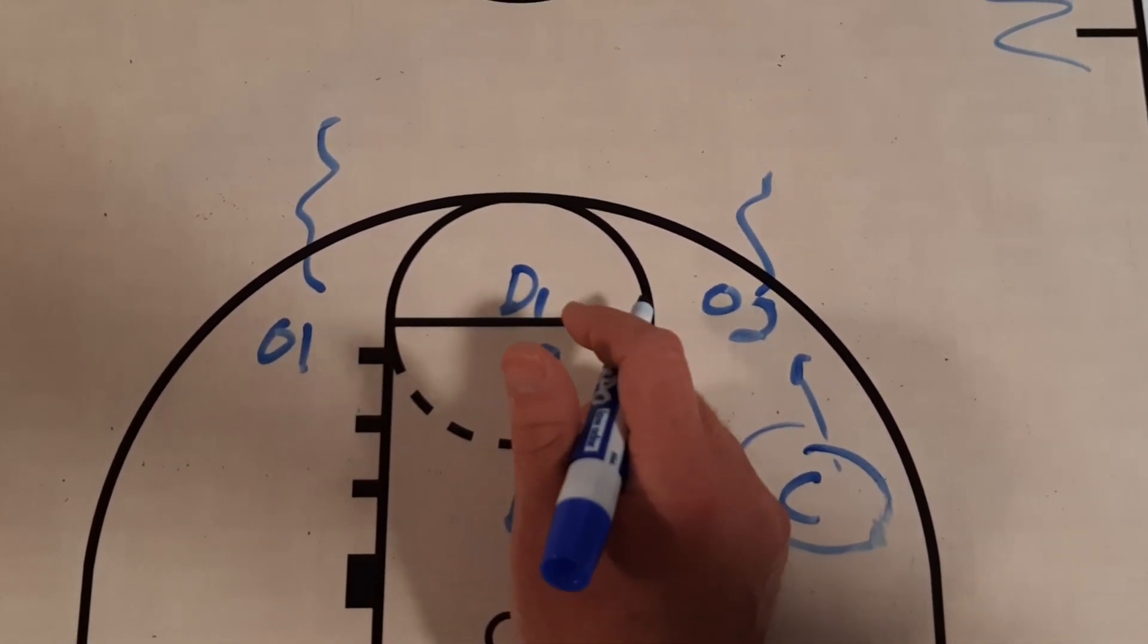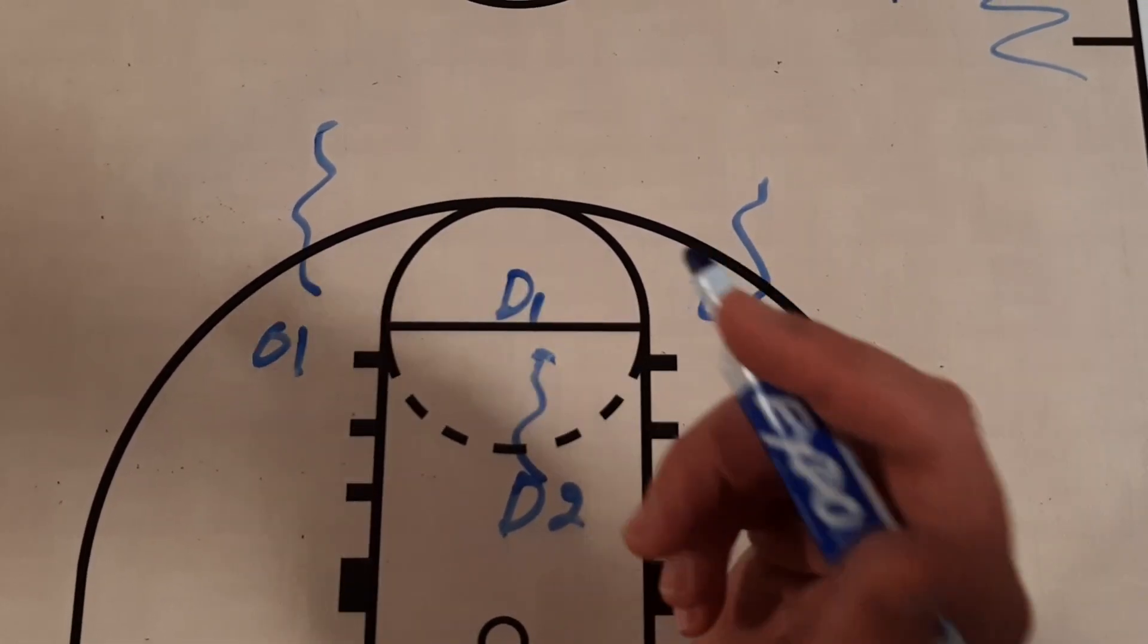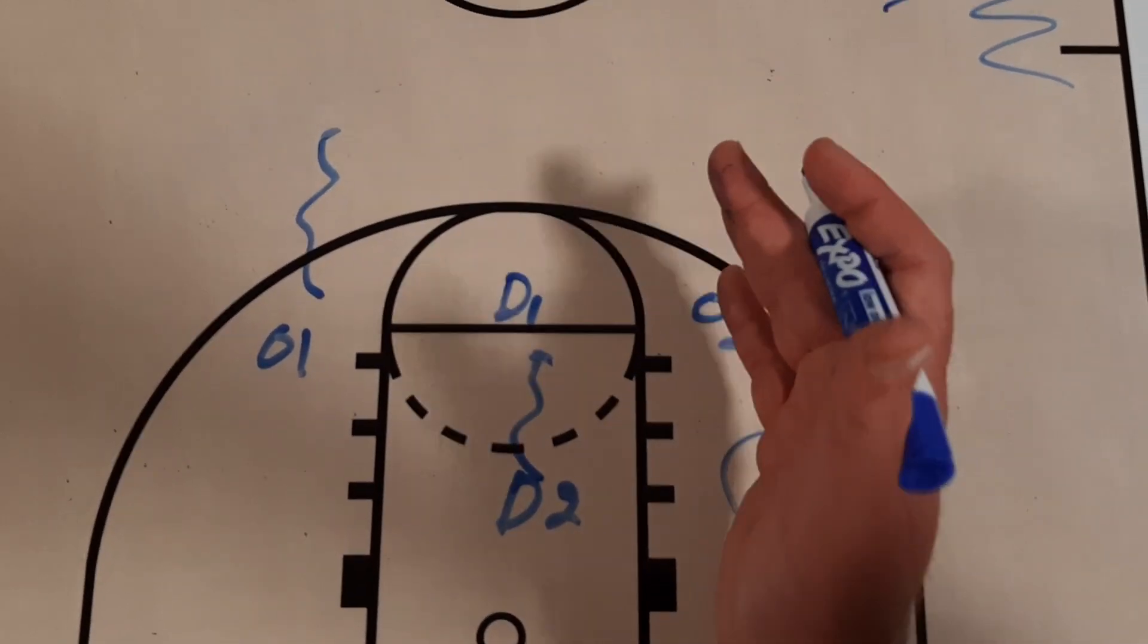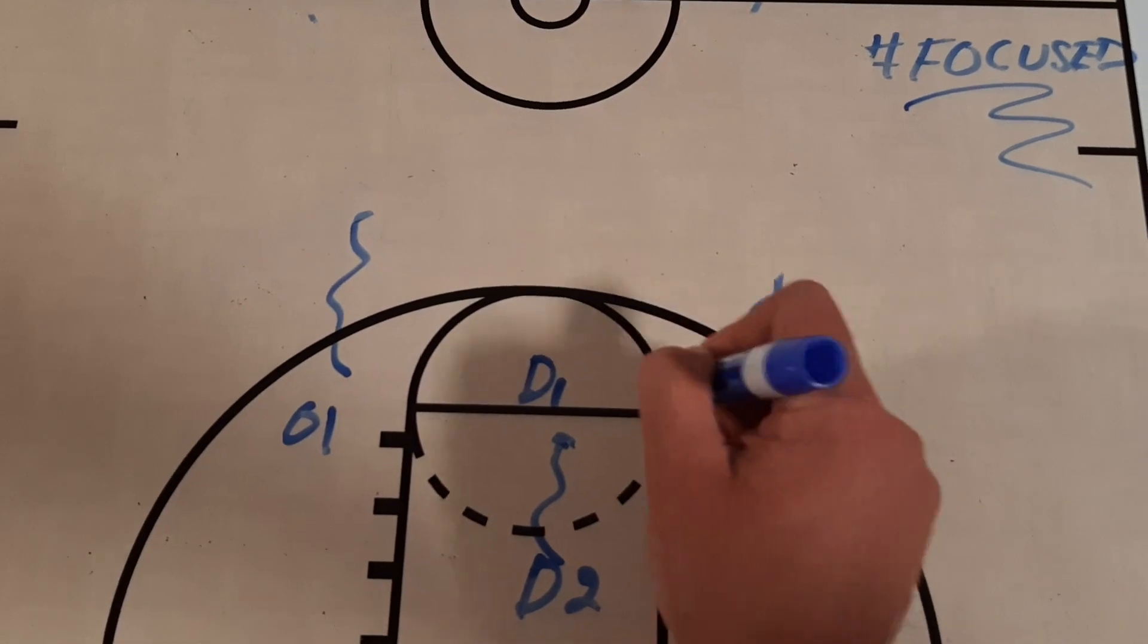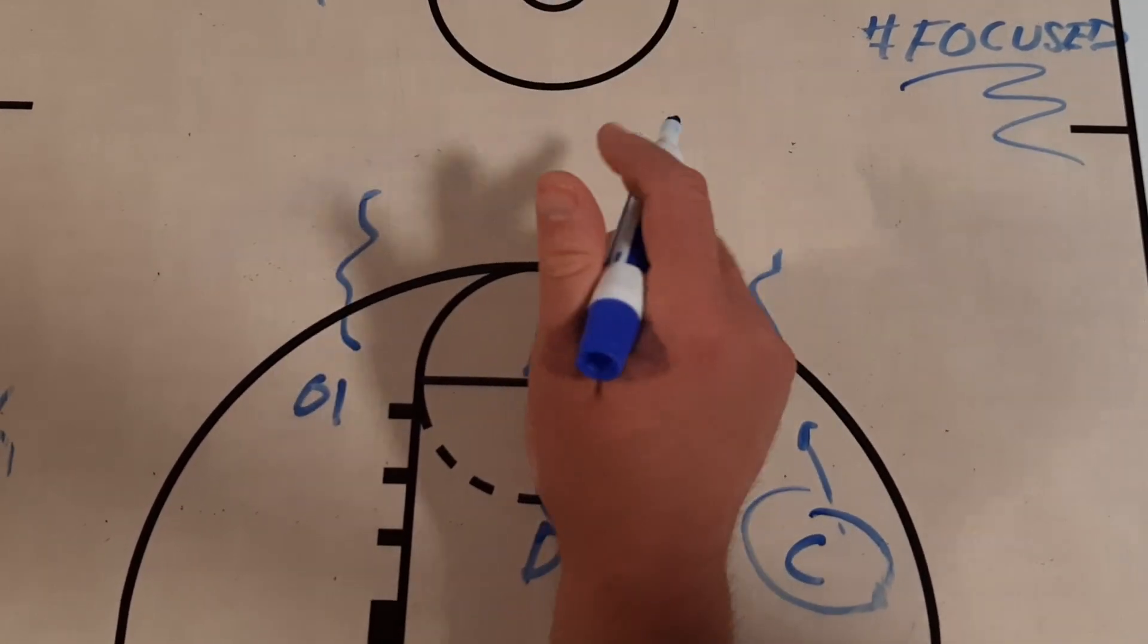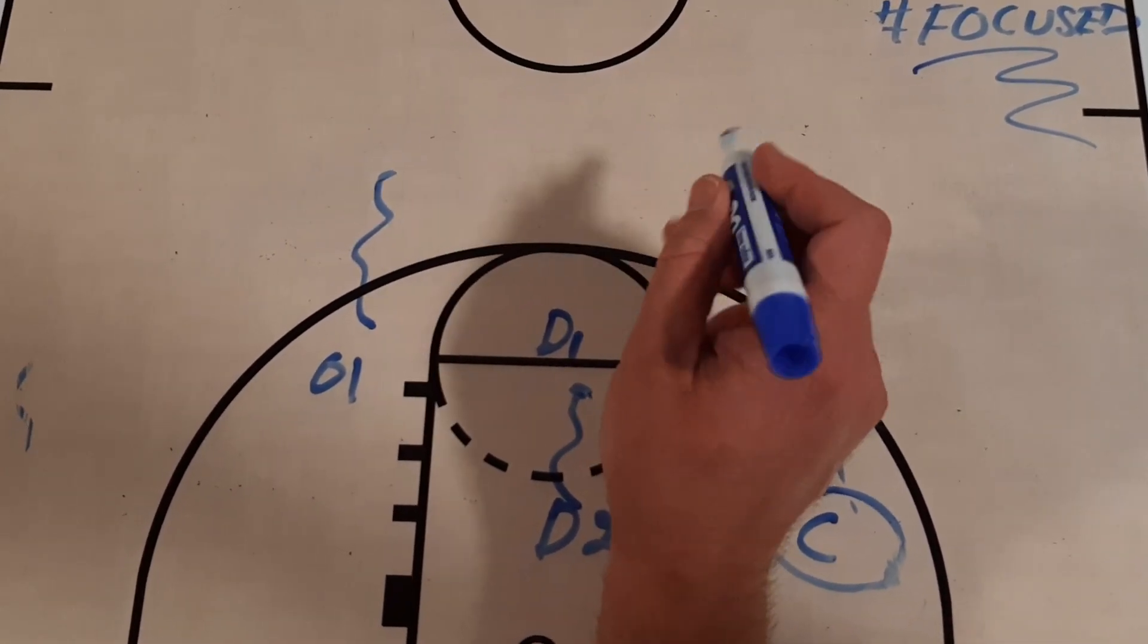You know, on the offensive end, your transition offense, you're finishing, your decision making. And on defense, you're working on sprinting in transition, or maybe even sprinting back and trying to back tap or chase and get matched up. So really good drill.